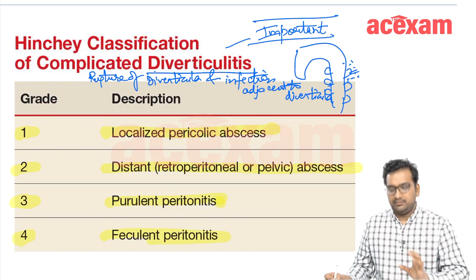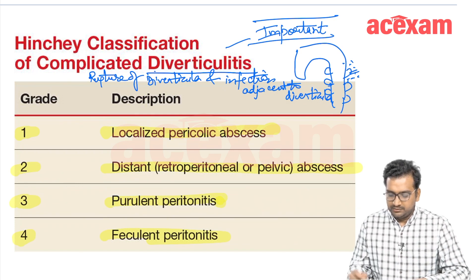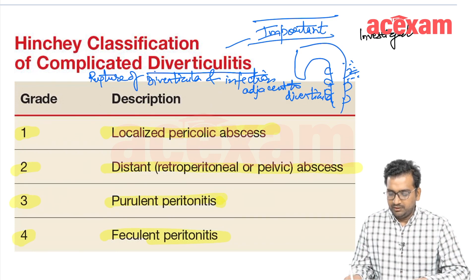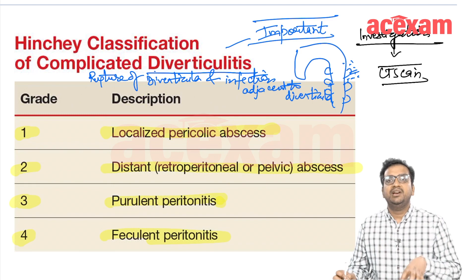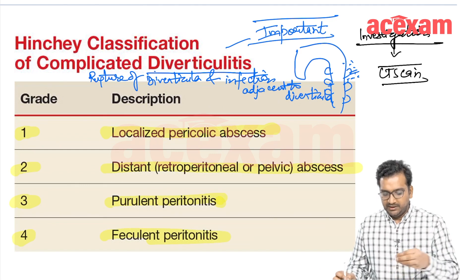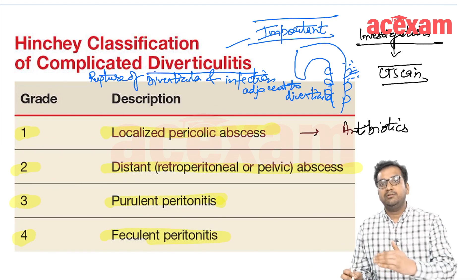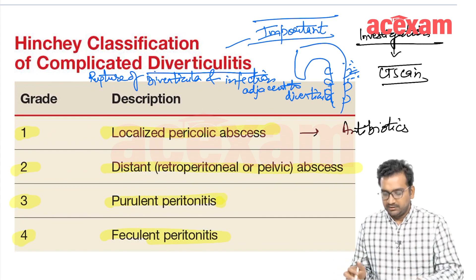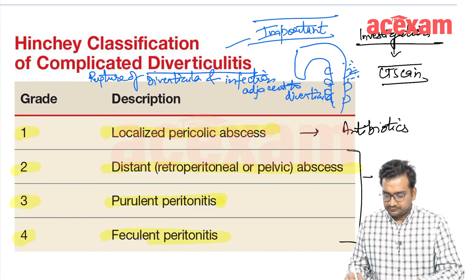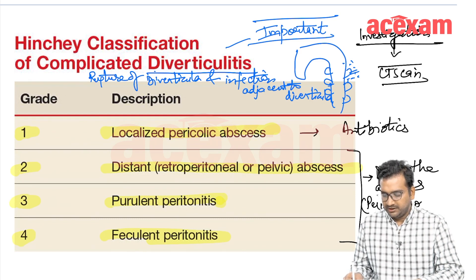Regarding treatment: we first proceed with a CT scan, which is the investigation of choice. With CT scan we can identify pus in the abdomen or a localized cavity. If there is a localized abscess, we can give antibiotics. If it is not resolving with antibiotics or if there is a large abscess cavity, we will have to drain the abscess with a percutaneous drain — ultrasound-guided or CT-guided.